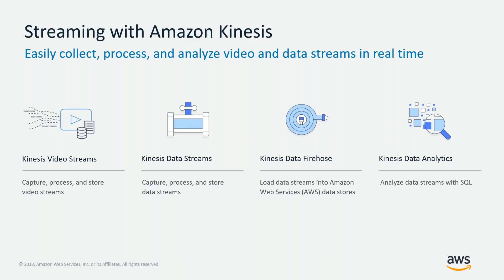Amazon offers a set of streaming services underneath Amazon Kinesis. The four services we offer: first, Kinesis Video Streams, our newest service, recently launched at re:Invent. It allows you to capture, process, and store video streams in real time. Core use cases include ingesting home camera feeds and security cameras. It also has good integrations with Amazon machine learning services, so you can do things like image recognition.